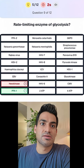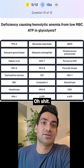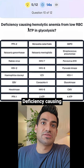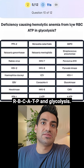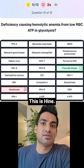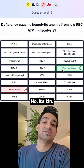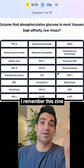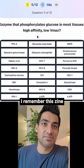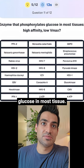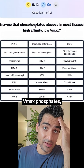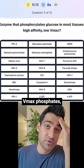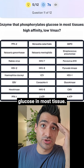Deficiency causing hemolytic anemia from low RBC ATP in glycolysis — I said hexokinase but it's pyruvate kinase. The enzyme that phosphorylates glucose in most tissues with high affinity and low Vmax — that's hexokinase.